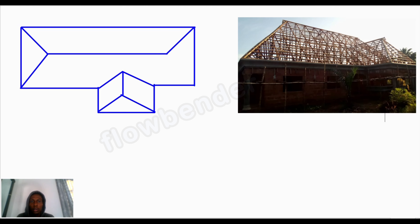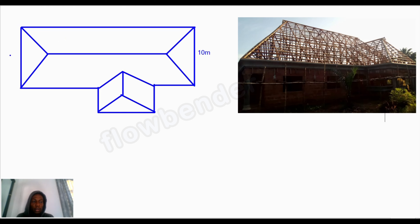We're done sketching how the building looks. Now I want to create dimensions. If you have your tape, you take it and measure the building from the ground — you don't have to climb to do that. If you don't have your tape, you can use your phone. I dropped the link to my Instagram page below where I showed how to use your phone to take measurements. I'm assuming I've taken the measurements, so I'm labeling the sketch — taking this side as 10 meters.